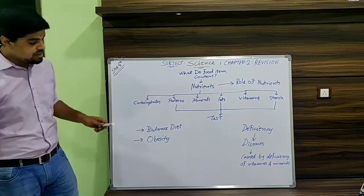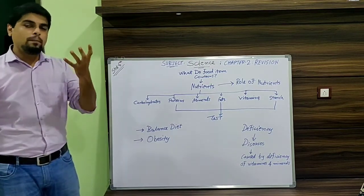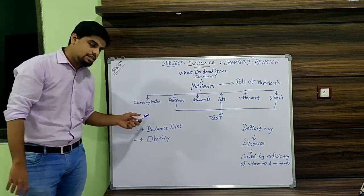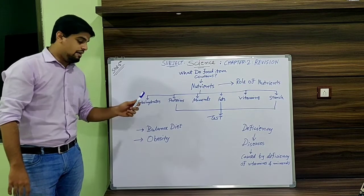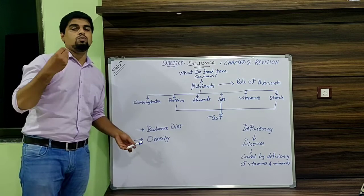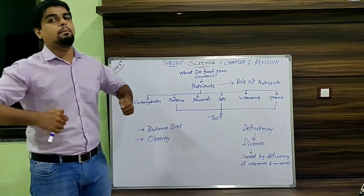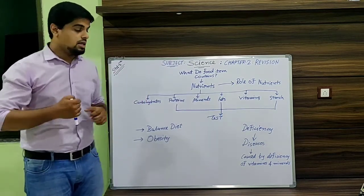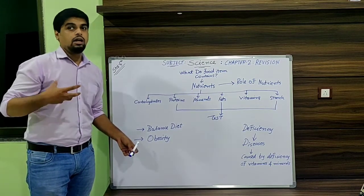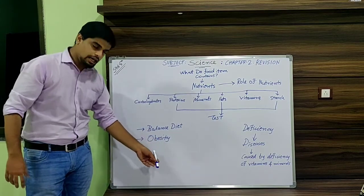After that we have the concept of balanced diet. If a diet contains the proper amount of every nutrient, then that particular diet is known as a balanced diet. After that we learned about obesity. If we consume food items which contain more fat, you will become bulky — such a condition is known as obesity. If food contains too much fat, the condition of obesity occurs.